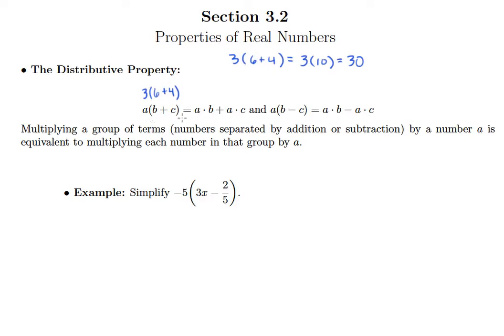So, what the distributive property says is that if you have a situation where you have something multiplied outside of parentheses, and then inside parentheses, you have a bunch of things either added or subtracted, what you can do is, instead of adding the stuff inside parentheses first and then multiplying, you could multiply the three by each term on the inside.